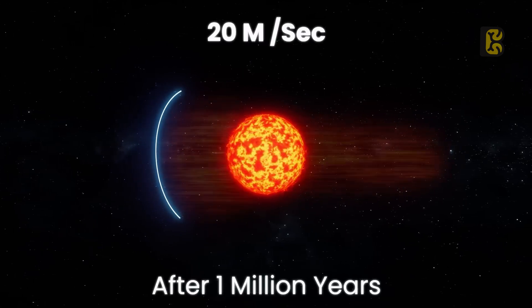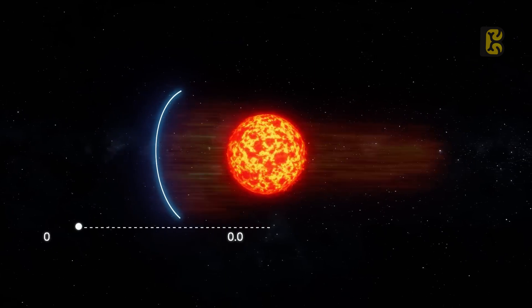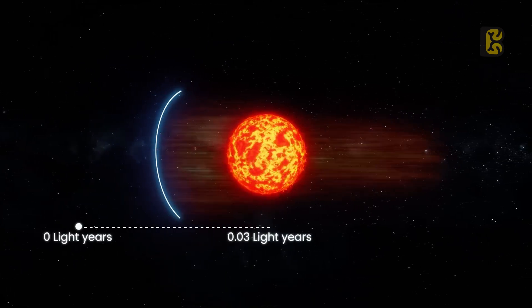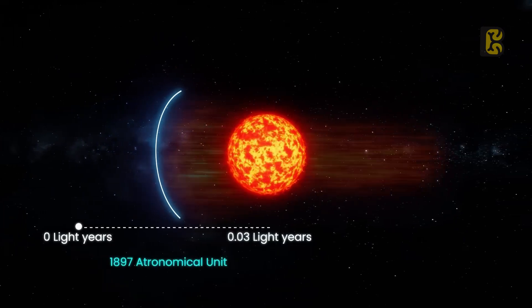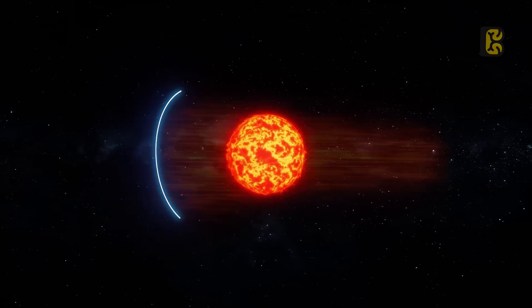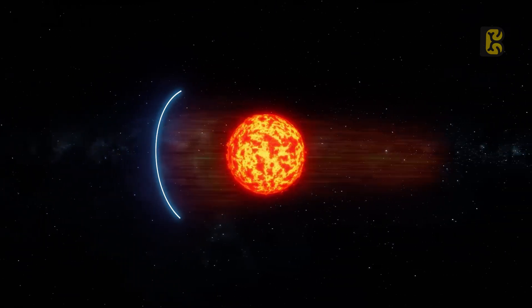In these one million years, our Sun will only displace by 0.03 light years from its position, which is equivalent to about 18,997 astronomical units. And this distance is huge, but this speed is not a stationary value because, over time, the Sun's traveling speed will continue to accelerate as the radiation pressure on it increases.